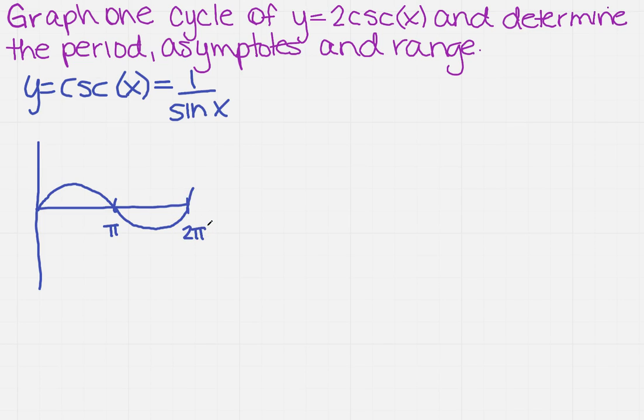So how does that help me? Well, I know if it's a cosecant, those values now are going to be where my vertical asymptotes are. So that's a dashed line. I'm going to have another one over here.